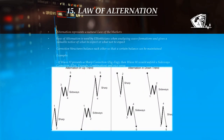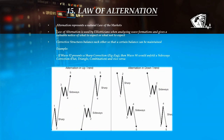Elliott pointed out that alternation is practically a law of the markets. Alternation gives a valuable notice of what to expect or what not to expect when analyzing wave formations. A difference in corrective structures occurs in order for a certain balance to be kept.